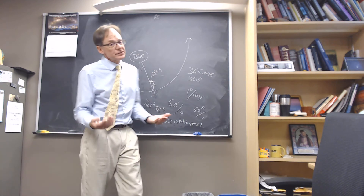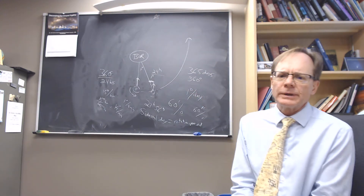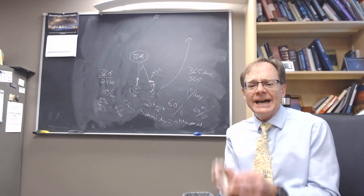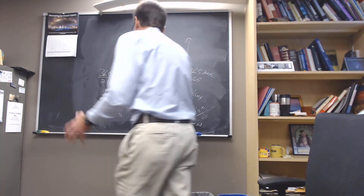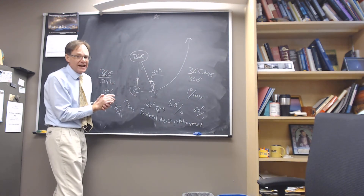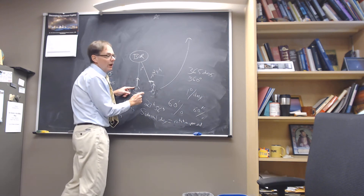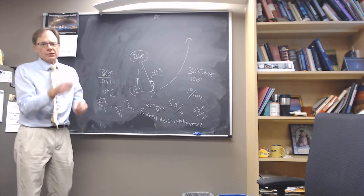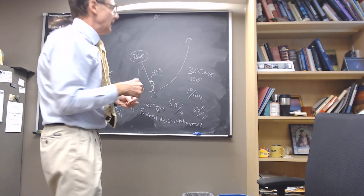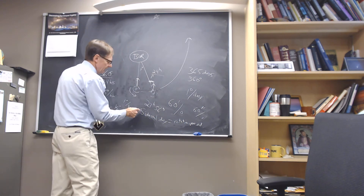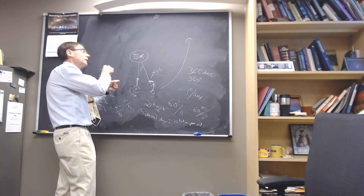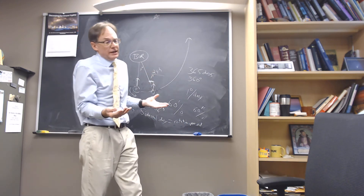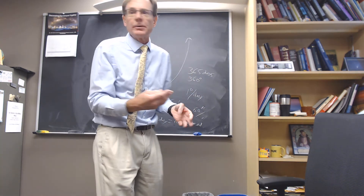Add four minutes to 23 hours and 56 minutes and you get 24 hours for the solar day. The solar day will vary because we're speeding up and slowing down as we get closer and further from the Sun. But the solar day is about four minutes longer than the sidereal day. If we were rotating faster, the difference between the sidereal day and the solar day gets smaller. If we're rotating more slowly, we go further in the orbit, need to over-rotate more, and those two things couple to make the difference larger.